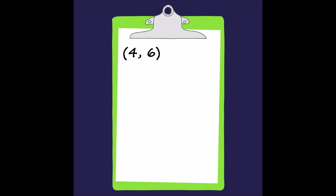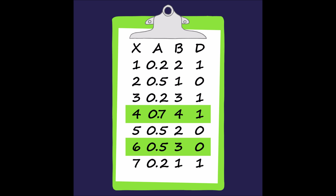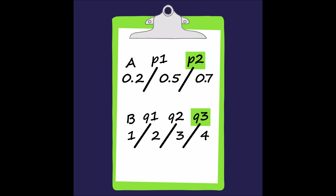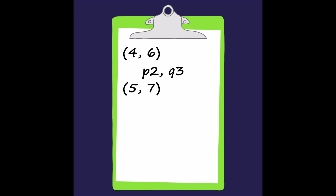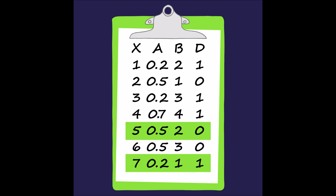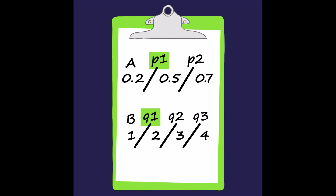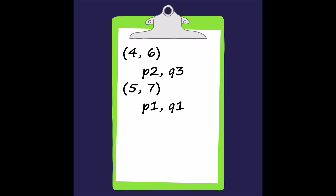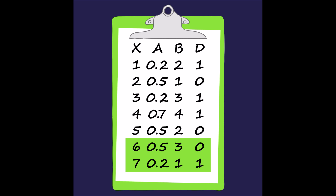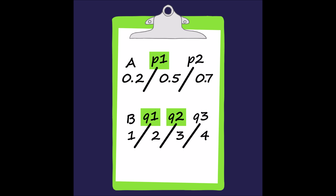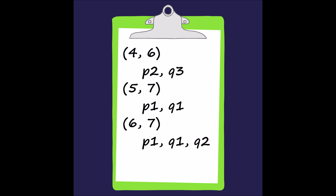When we look at tuples 4 and 5, we need splits on either P2, Q2, or Q3 to prevent them from becoming indiscernible. For tuples 4 and 6, we need splits on either P2 or Q3. For tuples 5 and 7, we need splits on either P1 or Q1. And finally, for tuples 6 and 7, we need splits on either P1, Q1, or Q2.